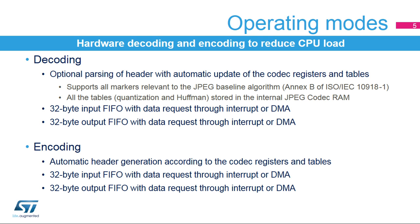While encoding, the JPEG Codec can automatically generate the JPEG header, copying its internal RAM content into the JPEG header. The output data file is sent through the 32-byte output FIFO, while the picture data are fed into the 32-byte input FIFO.